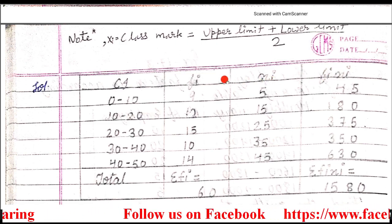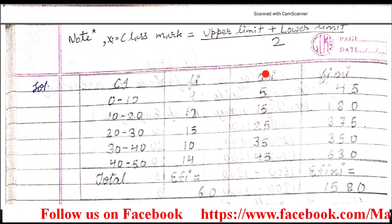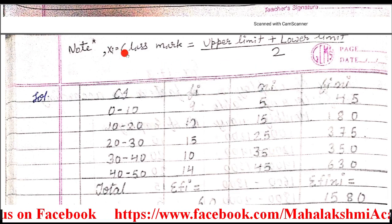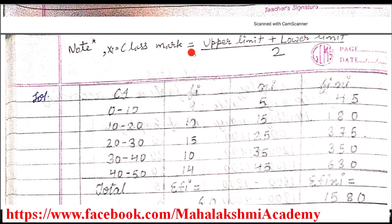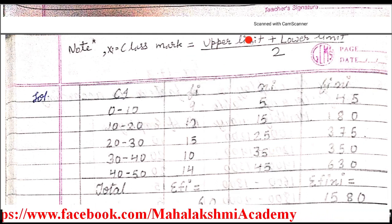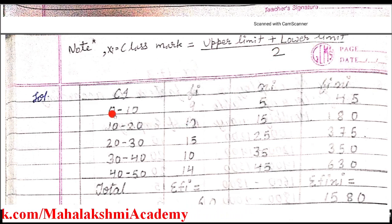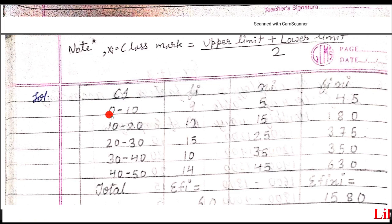We will understand how the class mark is obtained. There is a formula: xi (class mark) is equal to upper limit plus lower limit upon 2. If we want the class mark for a class interval, you have to add the upper limit plus lower limit. For 0 to 10, the upper limit is 10 and the lower limit is 0.